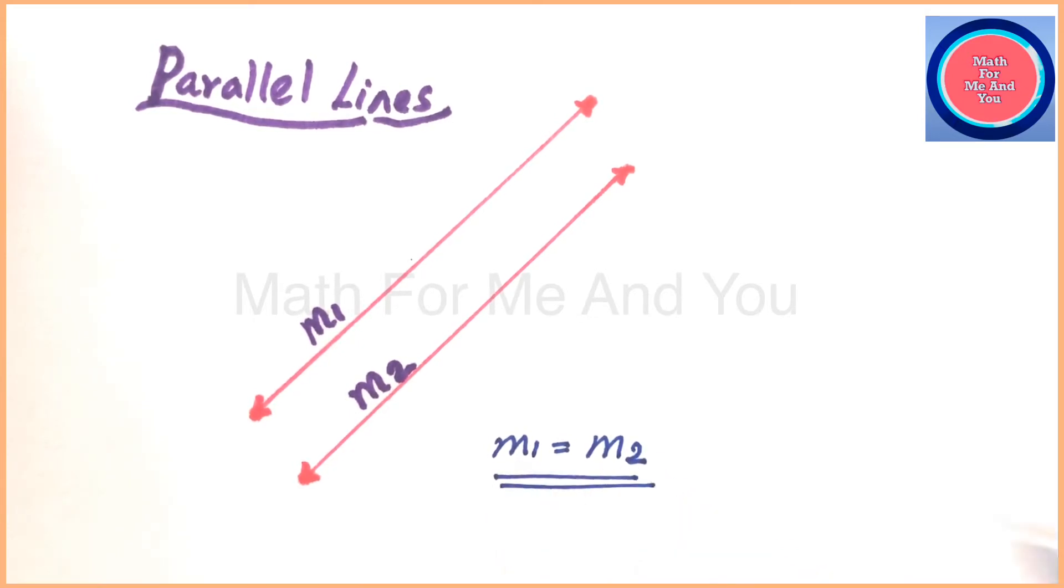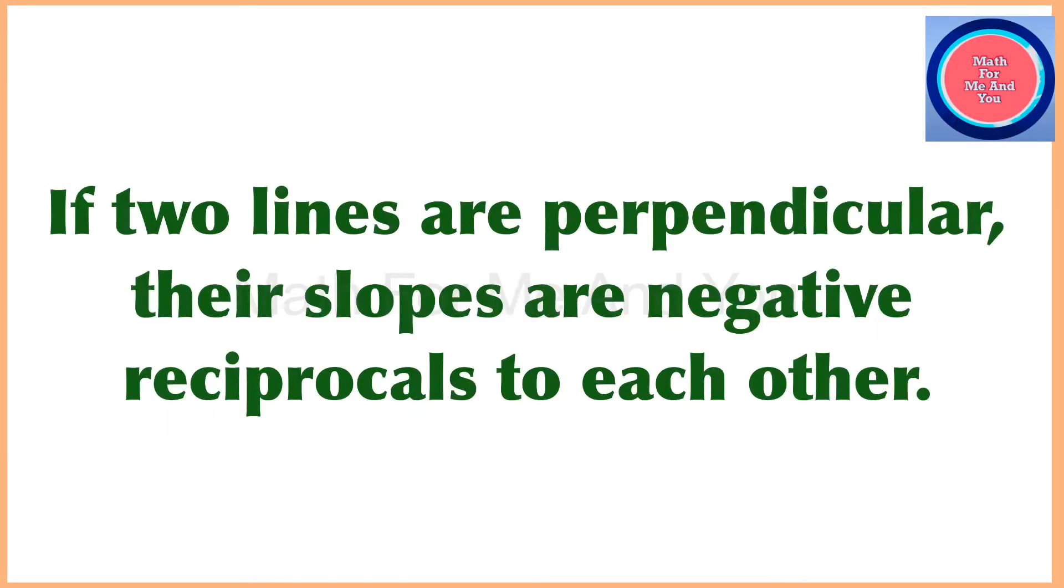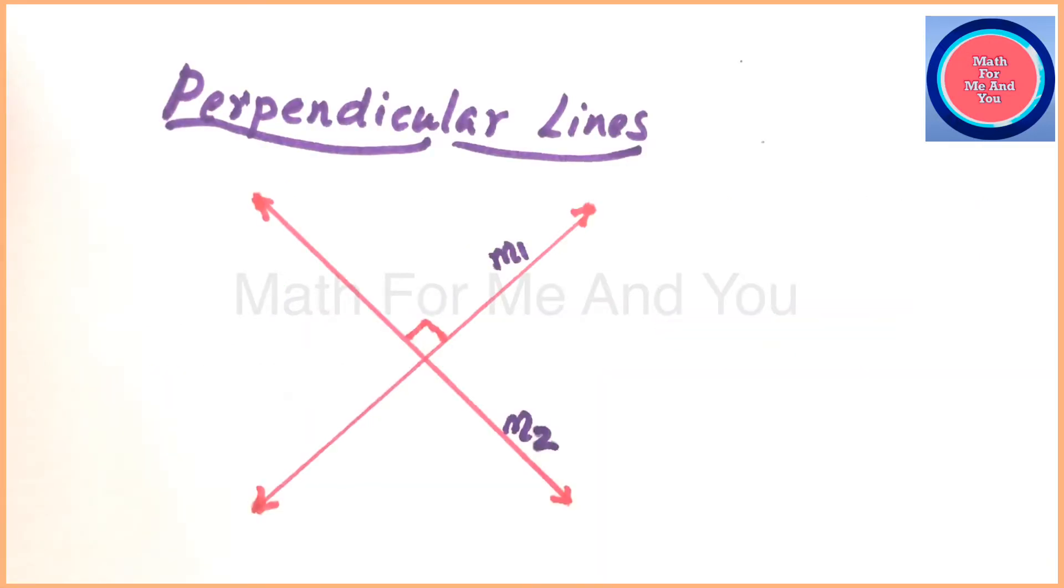Perpendicular lines: if two lines are perpendicular, their slopes are negative reciprocals to each other. Consider these two lines, they are perpendicular and their slopes are marked as m1 and m2. So we can write m1 equals minus 1 over m2, negative reciprocal.